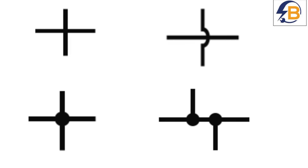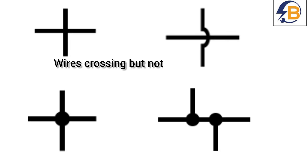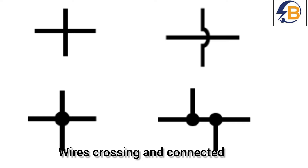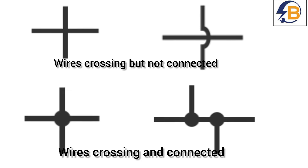In wiring, we use electrical wires, and at certain points the wires are joined together. At some points also, the wires cross each other but they don't connect. These symbols show whether wires are connected at a point or just crossing. If you see lines crossing like this, it means they are just crossing — they are not connected. Sometimes you can also use this format to show wires are crossing but not connected. At a point where wires connect together, you show it by providing a dot. If you see wires crossing with these dots, it means the wires are connected.